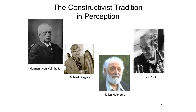More recently, the constructivist tradition in perception is represented by Richard Gregory, a British psychologist who wrote an important book on perception entitled The Intelligent Eye, and Julian Hochberg, an American psychologist who reformulated the Gestalt Law of Prägnanz as the minimum principle. Hochberg argued that there are a number of different patterns of stimulation compatible with any particular percept, and that the job of the perceiver is to select the percept most compatible with the conditions of stimulation. Finally, Irvin Rock mounted perhaps the most direct challenge to the Gibsonian ecological insurgency by writing a book entitled Indirect Perception, arguing forcibly that perception was mediated by higher cognitive processes.